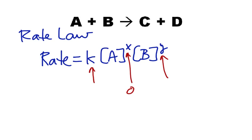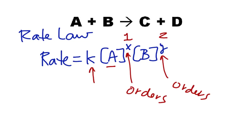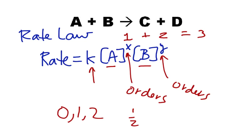The x and the y are called the orders of the reaction. If we find that x is 1, we say the reaction is first order with respect to A. If y comes out to be 2, we say it's second order with respect to B, and third order overall — we just add those orders together. The orders most commonly will be 0, 1, or 2. You can find a half order, and there are situations where it could be a negative order, which means increasing that concentration actually slows down the reaction. Concentration in brackets means moles per liter.